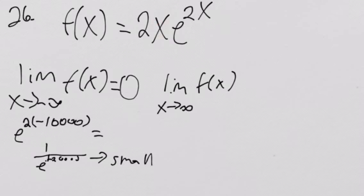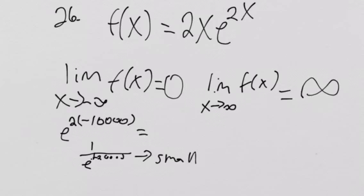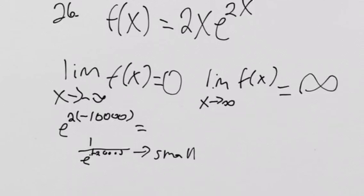When x goes to infinity, both of these are going to be large. e to the 2 times infinity and 2 times infinity are both large numbers, so that's going to approach infinity. Any time an exponential function is involved and you're going off to negative infinity, you know that exponential function is going to approach 0, and 0 times anything is just 0. So that's the justification for this one.